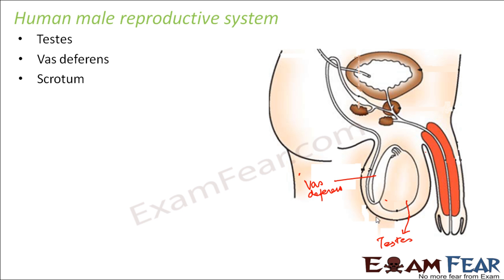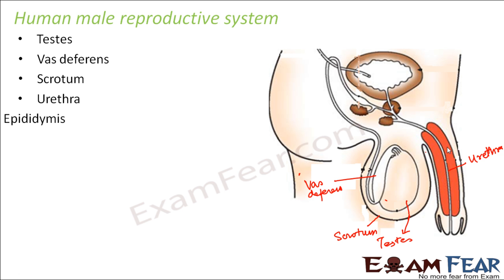Next we have scrotum — scrotum is this covering which is present outside the testes. Next is urethra, which is this pipe-like structure that we see here. Next is the epididymis — it is basically this tube-like structure. From the vas deferens it comes to the epididymis, and from there it joins the urethra. And finally the penis — this entire structure is the penis.